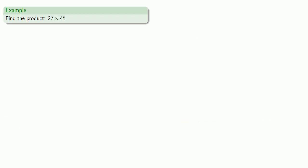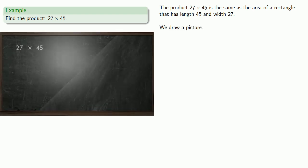Or how about 27 times 45? Now, the product 27 times 45 is the same as the area of a rectangle that has length 45 and width 27. So we'll draw a picture.